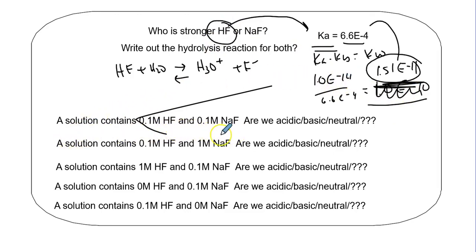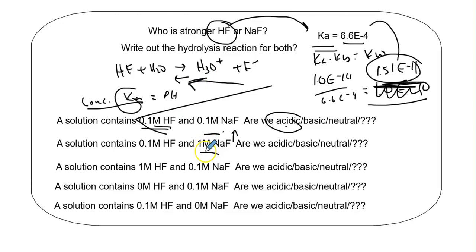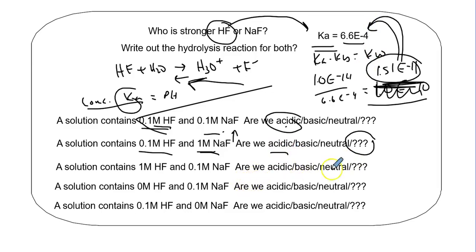The solution contains 0.1 molar HF and 0.1 molar NaF. Remember, concentration and Ka values determine pH and H+ and OH- concentrations. Are we acidic, basic, or neutral? Our acid and base are the same concentration, so the forward reaction will be more vigorous due to acid strength. Is the 0.1 molar concentration enough to counteract the increased strength of the acid? I'd need to do some math - probably not, since strength-wise it looks like about a million times stronger.